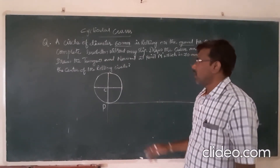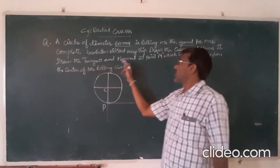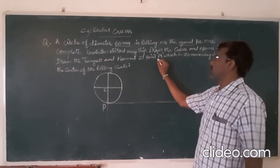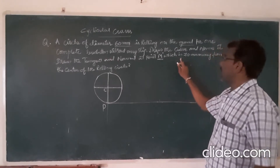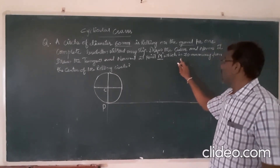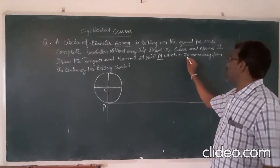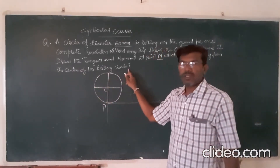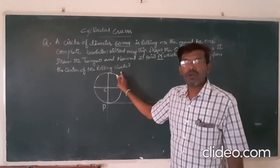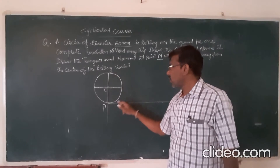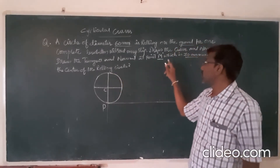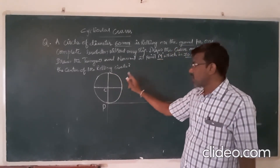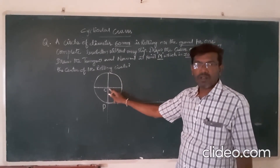Next, draw the tangent and normal at a point M which is 70 mm away from the center of the rolling circle. So you have to locate such a point M which is at a distance of 70 mm from the center of the rolling circle.